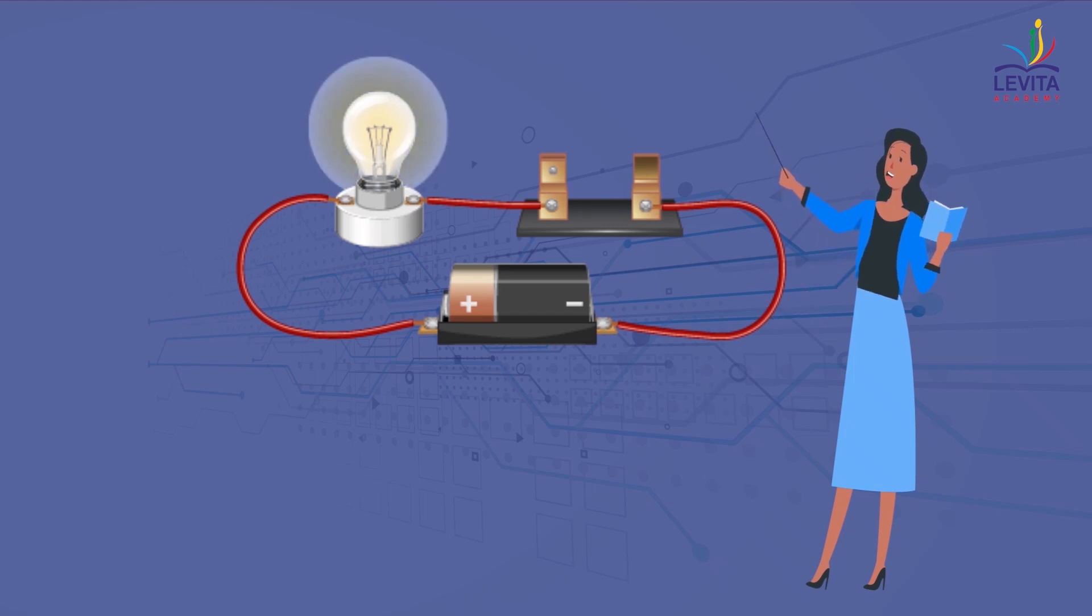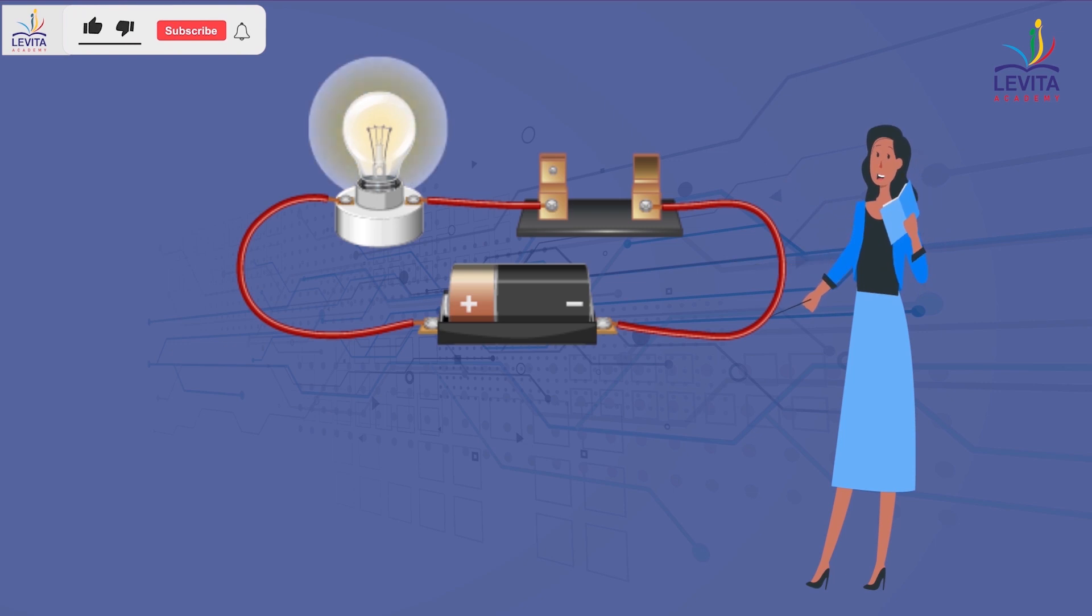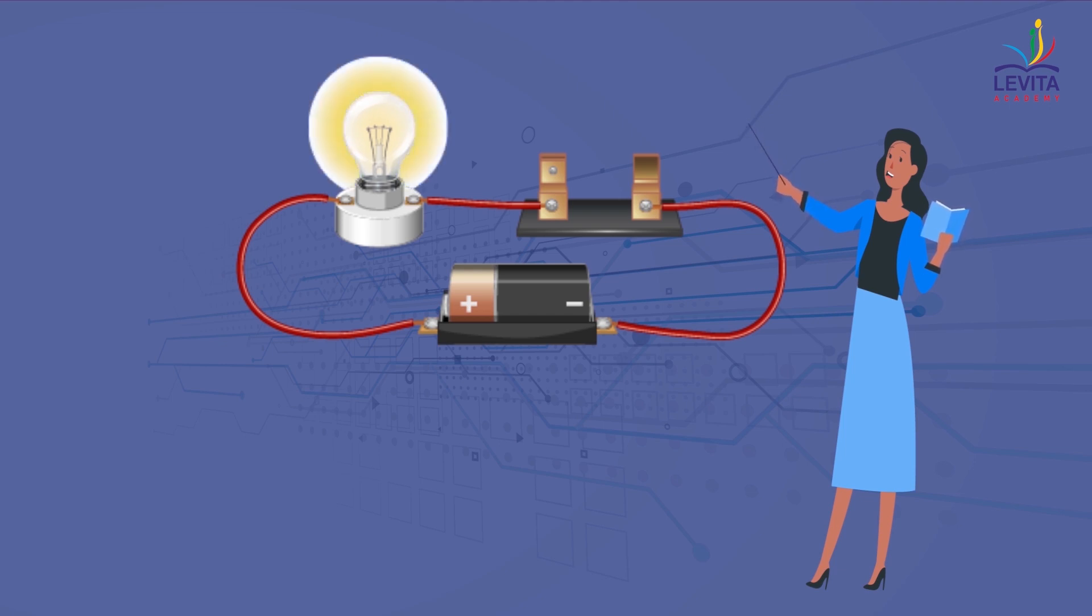We have already seen that the generation of heat in a conductor is an inevitable consequence of electric current. That is, heat will be generated in a conductor regardless of the ease with which electric current can pass.